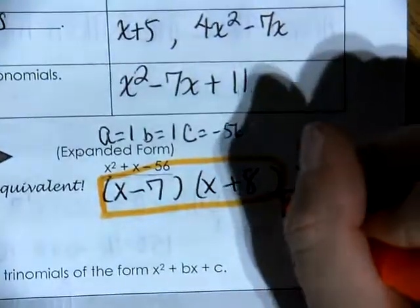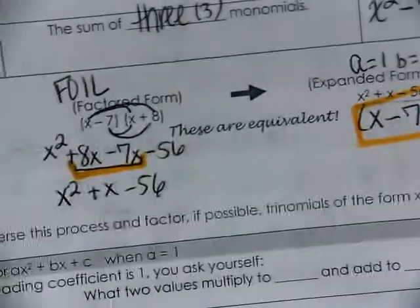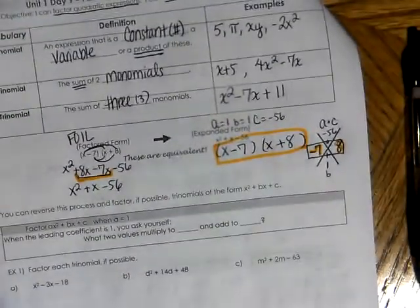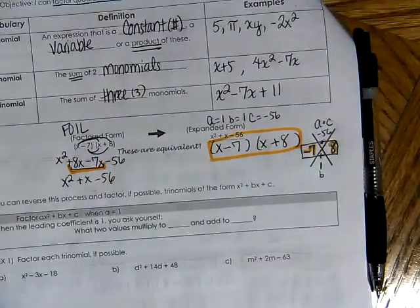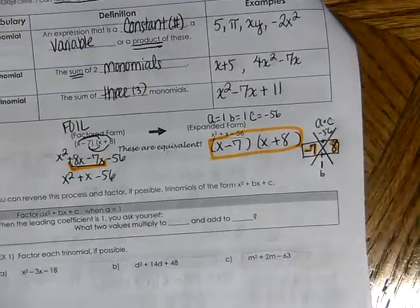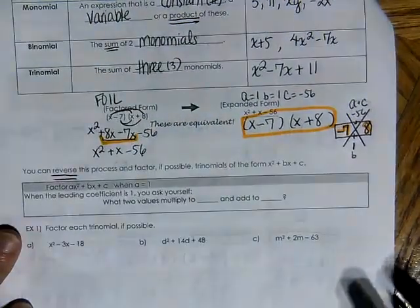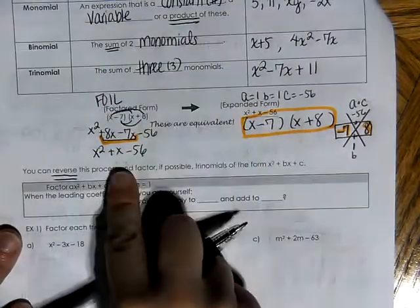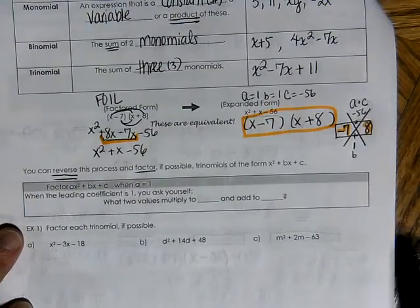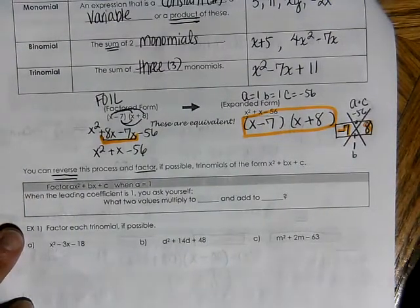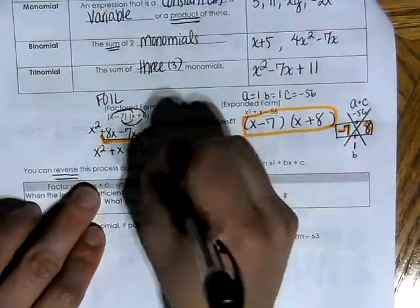Notice that this minus 7 and this 8 appeared right here in our expanded form — that's how FOIL and factoring are connected. The reverse process of FOIL is called factoring. Sometimes trinomials are factorable and sometimes they are not, so you can reverse this process and factor if possible.